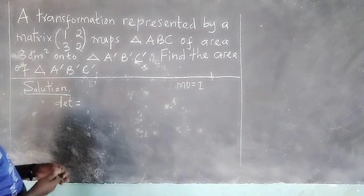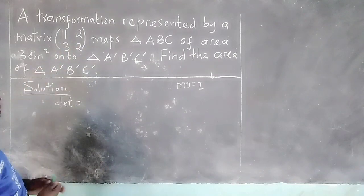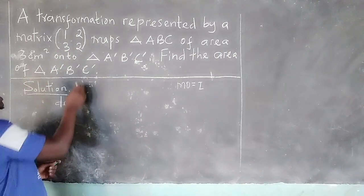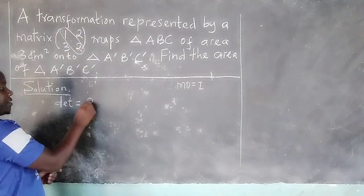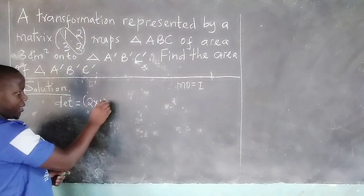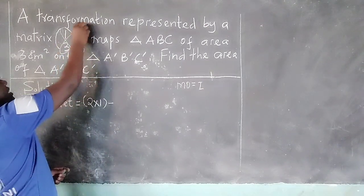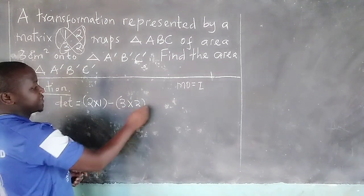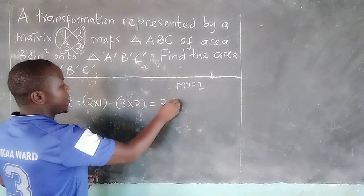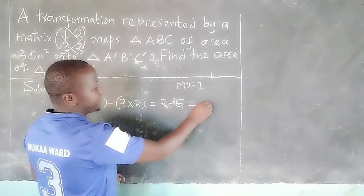whereby the determinant of a matrix of 2 by 2 is given by the product of the elements in the leading diagonal, in which case here we have 2 by 1, minus the product of the elements in the other diagonal, 3 by 2, such that we have 2 minus 6, and this will give us negative 4.